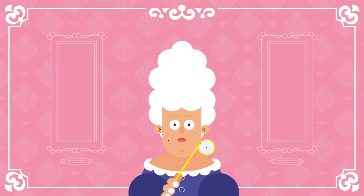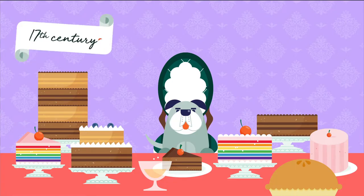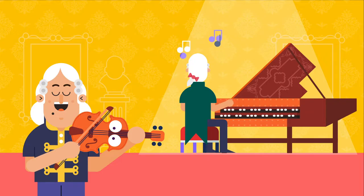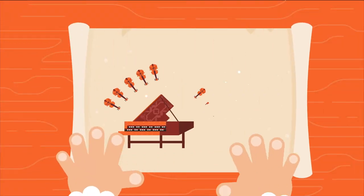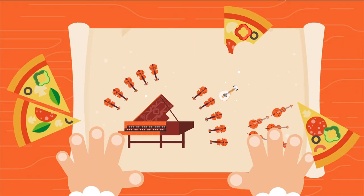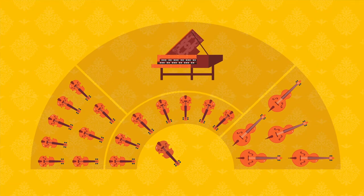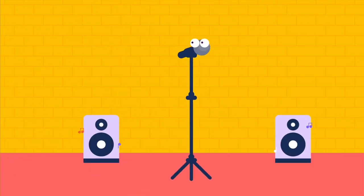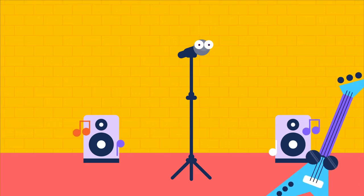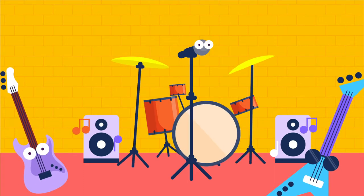Not convinced? Let's have a look at what each band member does. In the late 17th century, Italian composers began experimenting with a new form of ensemble known as the concerto. In a concerto, a soloist is accompanied by an orchestra consisting of strings, bass and continuo. In a band, a lead guitarist or singer is backed by the rhythm section consisting of a rhythm guitar, bass guitar and drums.